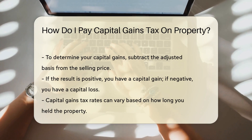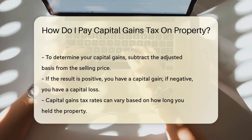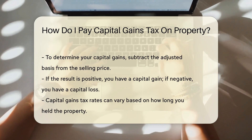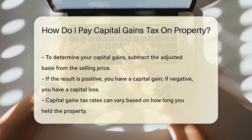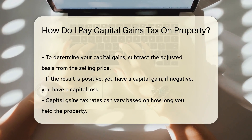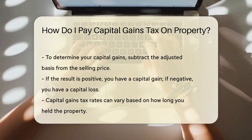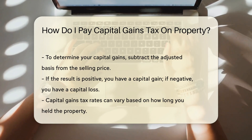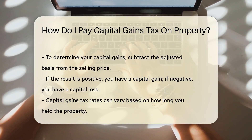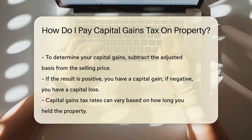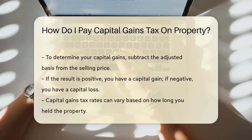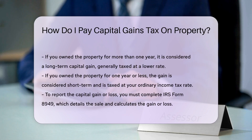Capital gains tax rates can vary based on how long you held the property. If you owned the property for more than one year, it is considered a long-term capital gain. Long-term capital gains are generally taxed at a lower rate than short-term gains. If you owned the property for one year or less, the gain is considered short-term, and short-term capital gains are taxed at your ordinary income tax rate.